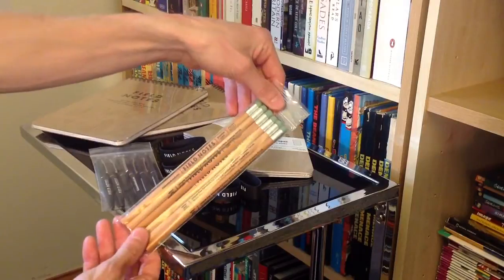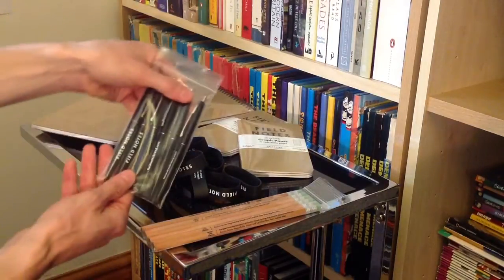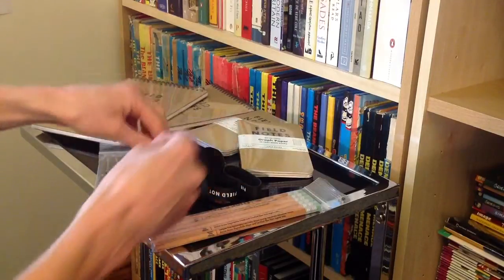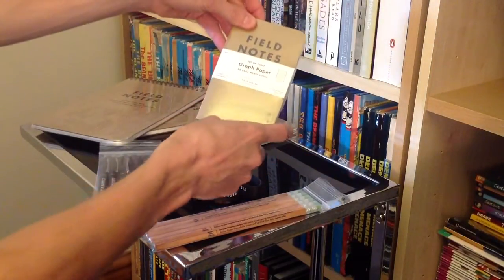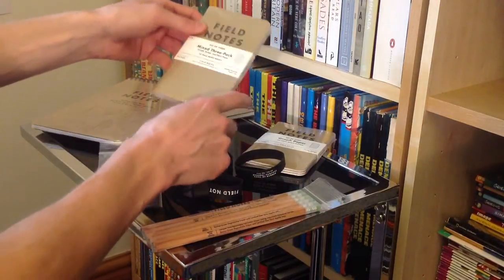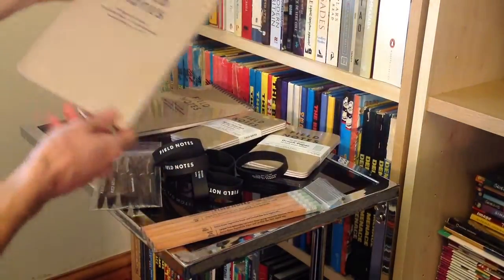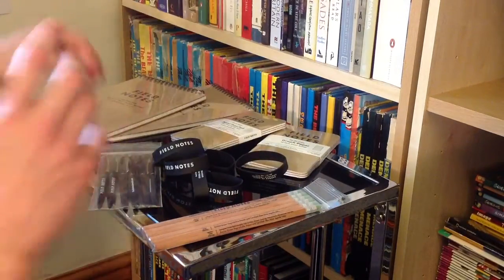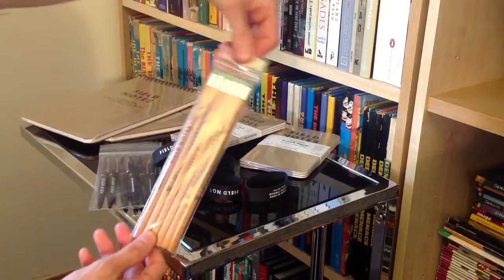We've got six number two pencils, six click pens, six Field Notes band of rubbers, a pack of three graph paper memo books, a mixed pack of three books, that's graph, ruled and plain paper and then two steno books. I don't really know where to start. I suppose we'll dive in and have a closer look at the pencils.